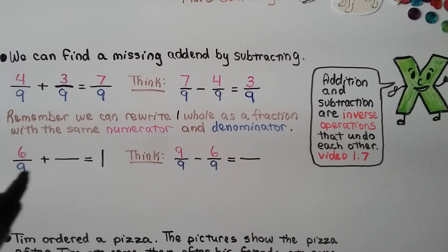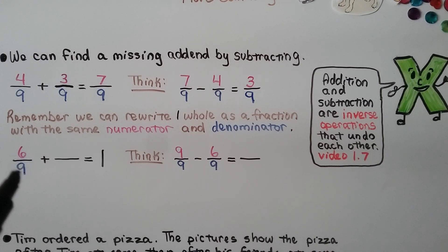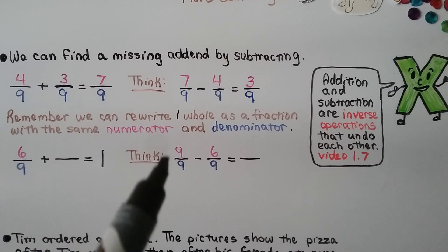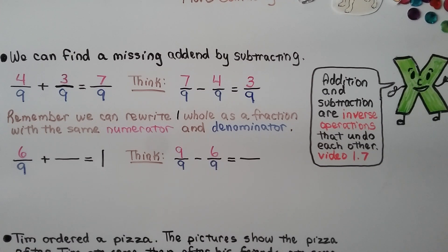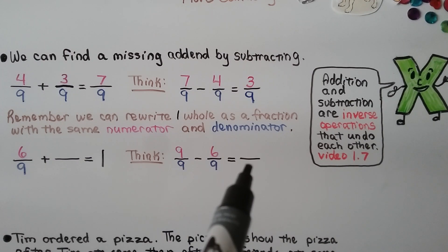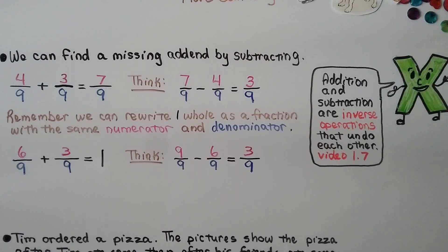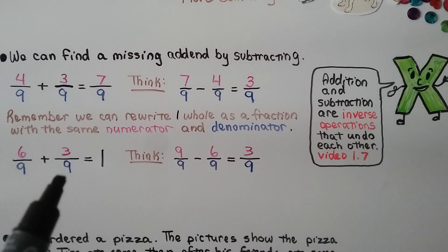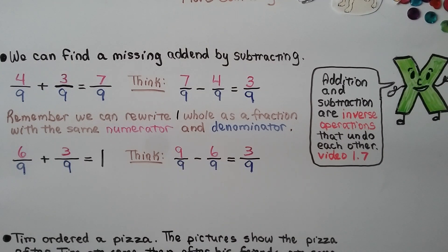We have 6 ninths plus some fraction equal to 1 whole. Since 9 is the denominator, we can use 9 ninths as the 1 whole and subtract 6 ninths. Because they both have 9 as a denominator, the denominator of the difference will be 9. 9 minus 6 equals 3, so the missing addend is 3 ninths. 6 ninths plus 3 ninths equals 9 ninths, which equals 1 whole.